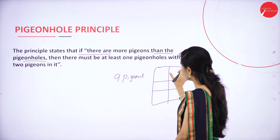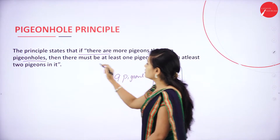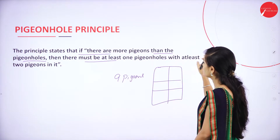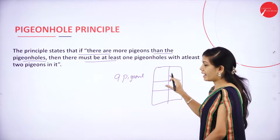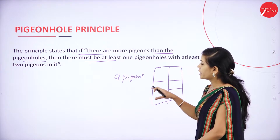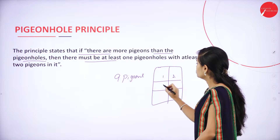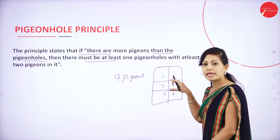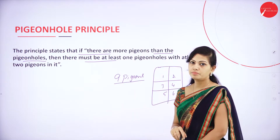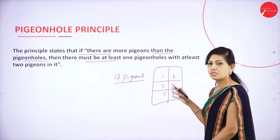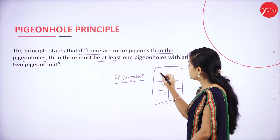I have 6 pigeon holes — 1, 2, 3, 4, 5, 6 — and 9 pigeons. Then there must be at least 1 pigeon hole with at least 2 pigeons in it. I have 6 pigeon holes and 9 pigeons. So how to accommodate 9 pigeons into 6 boxes? I can easily accommodate 6 pigeons in 6 boxes, but I have 9 pigeons. So here at least 1 pigeon hole contains 2 pigeons.